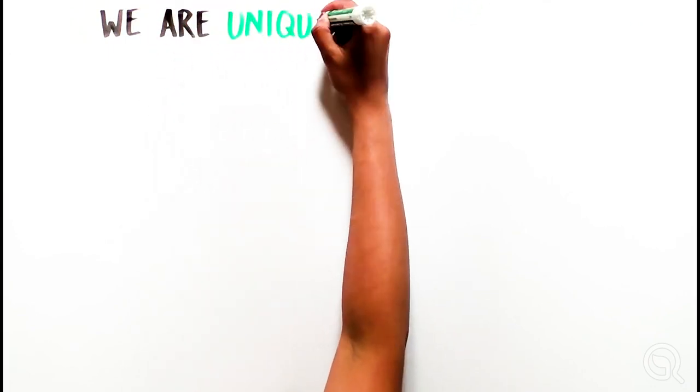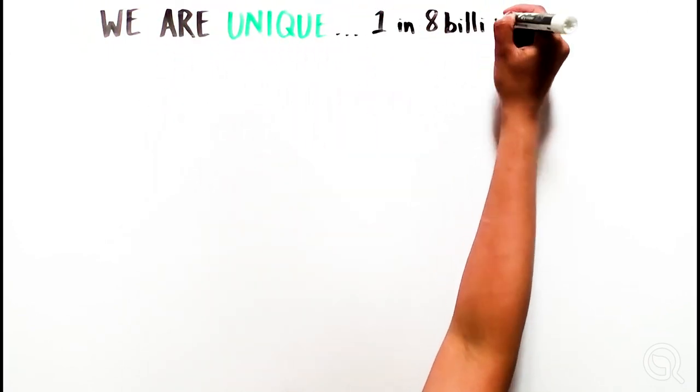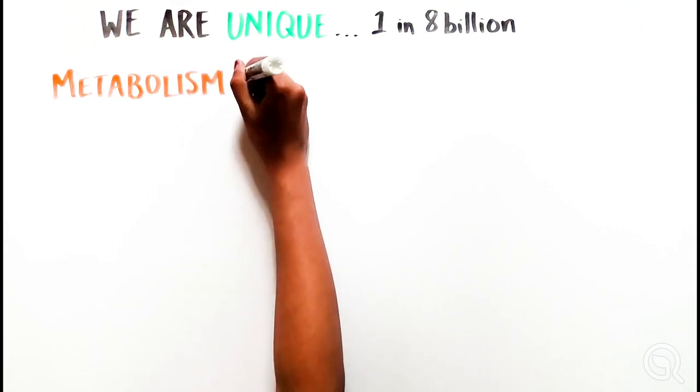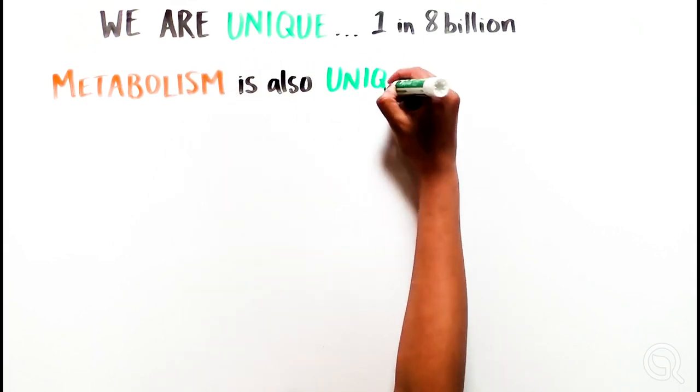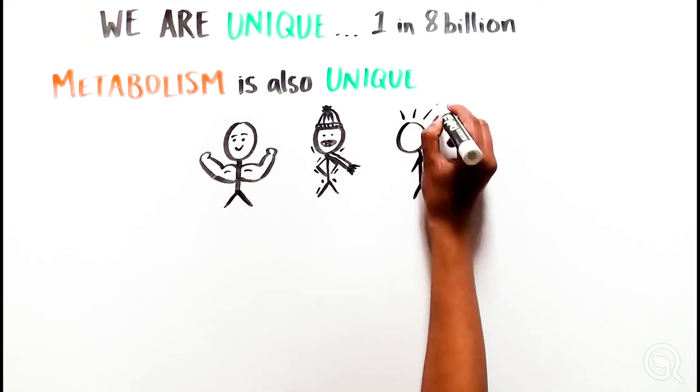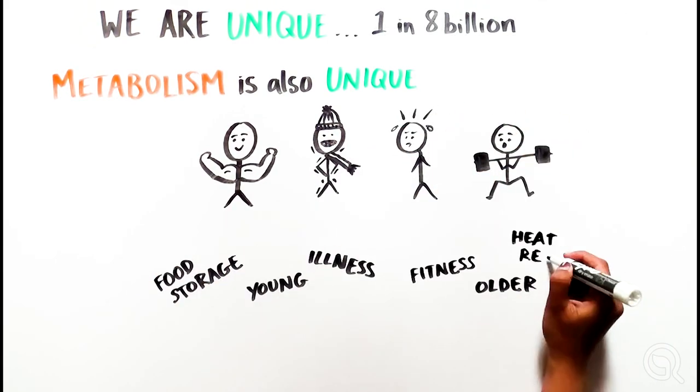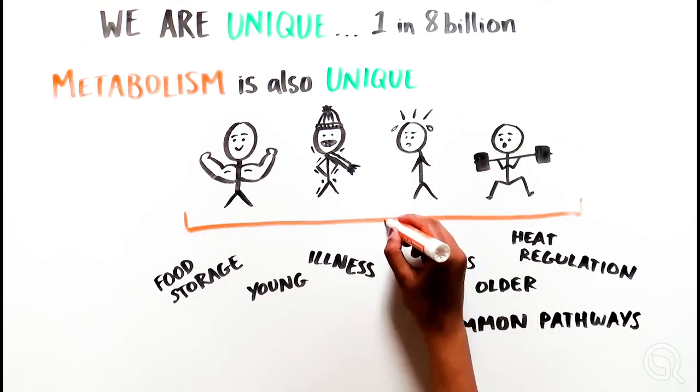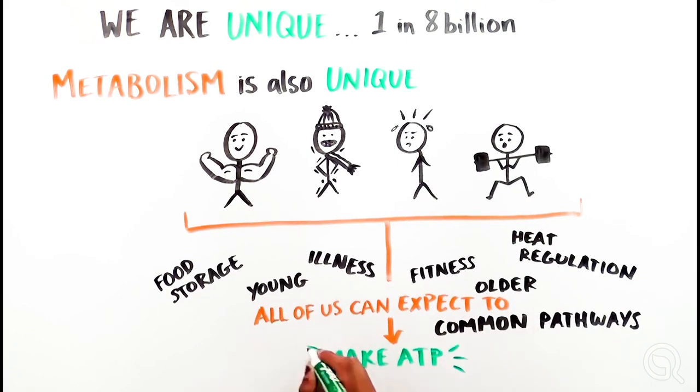We are each unique, 1 in 8 billion, and metabolism is a perfect example of that. We all vary in how we process and store food, how much we exercise and regulate heat, but the underlying pathways are mostly the same, so we can all expect to keep making that ATP to get us up in the morning and around the block.